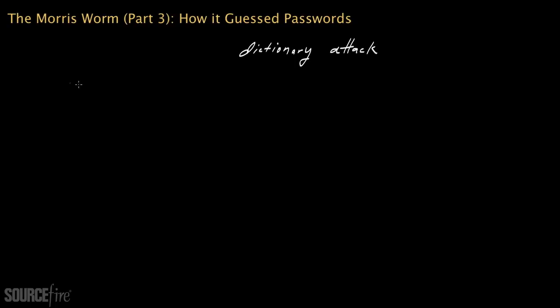But basically, the Morris worm would look for a specific file that exists on Unix systems, known as /etc/passwd. And this file /etc/passwd contains the names of users, their account names, and it also includes a hashed version of their password.